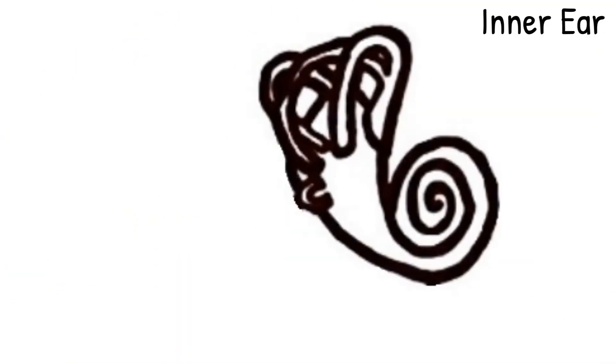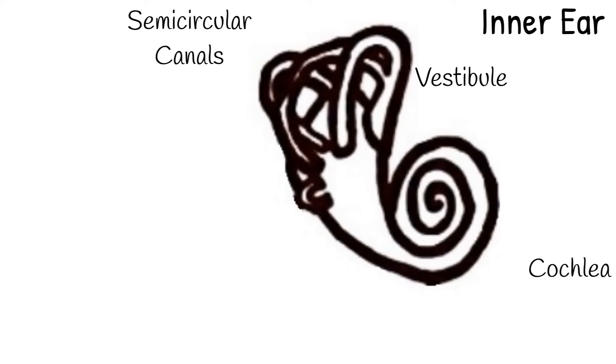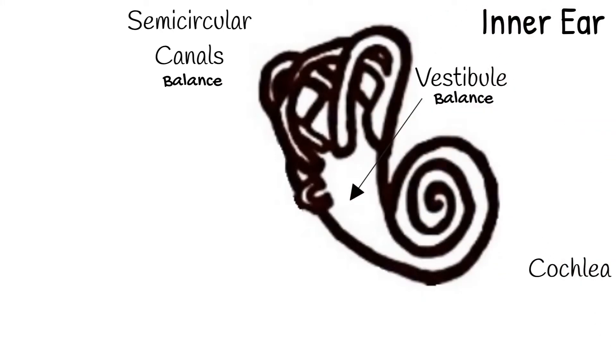Your inner ear has three areas: the vestibule, semicircular canals and the cochlea. Helping your balance is the job of the vestibule and semicircular canals. The vestibule has two small sacs filled with fluid which establish your head position. It tells your brain where your head is if it is up or bent down. This is also called static equilibrium. Static as your head is not moving.